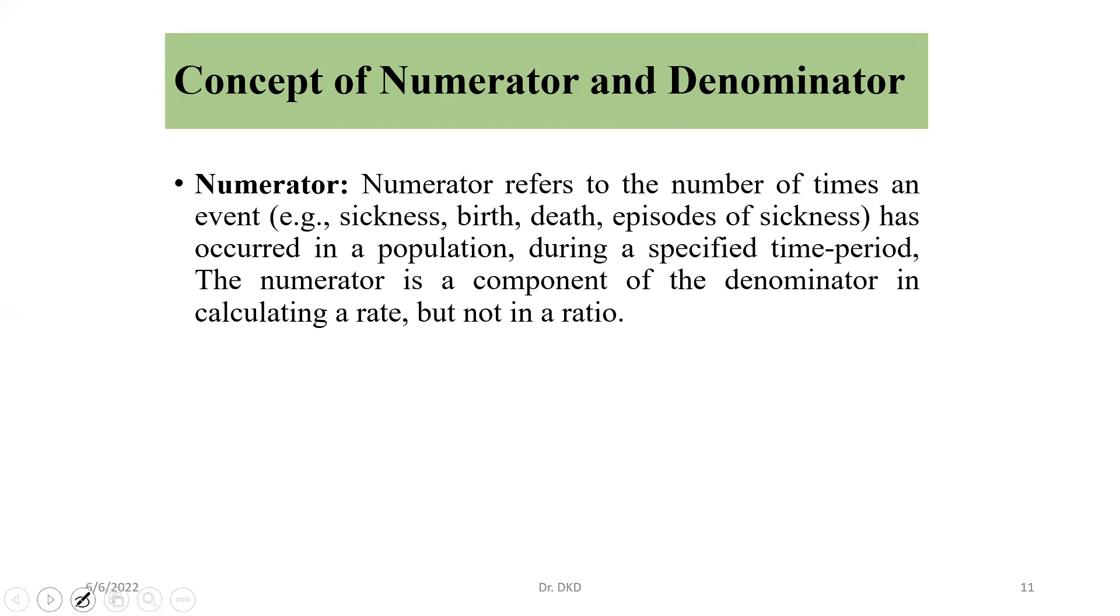In numerator, numerator refers to the number of times an event, for example sickness, birth, death, episodes of sickness, has occurred in a population.